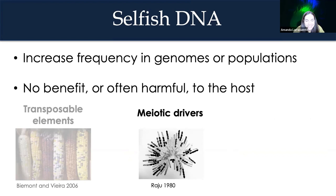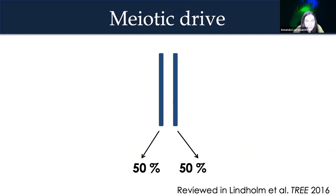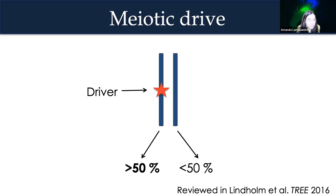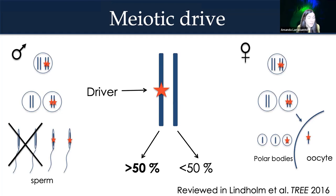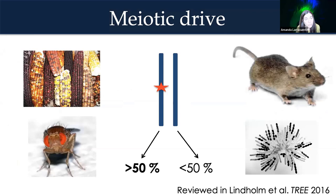Another overtly selfish genetic element are the meiotic drivers, which is what I want to talk about today. One of the fundamental principles of Mendelian inheritance is the equal segregation of chromosomes to 50% of gametes. But cheaters can arise and subvert the fairness of meiosis, biasing their transmission to more than 50% of gametes. These cheaters are called meiotic drivers, and they can spread in populations even though they come at a cost to the host. We find meiotic drive in the male germline — often as sperm killers — and in the female germline where drivers bias segregation towards the oocyte instead of the polar bodies.